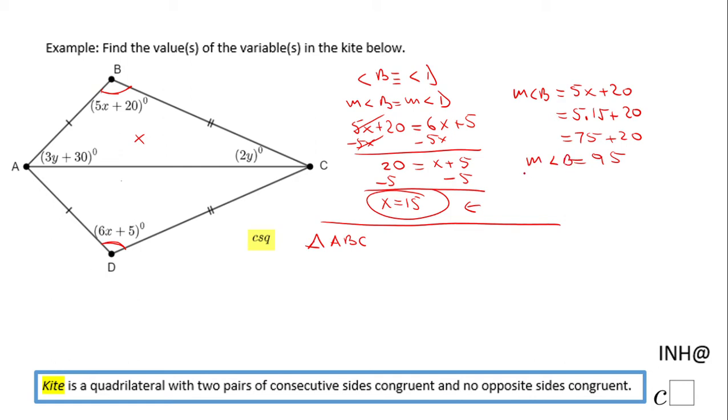We're going to write the sum of the interior angles of triangle ABC. So the measure of angle B, I'm going to start with that one, plus the measure of angle BCA plus the measure of angle BAC. The sum of these three angles is 180.